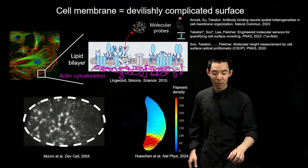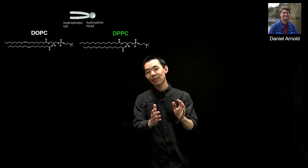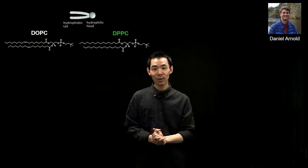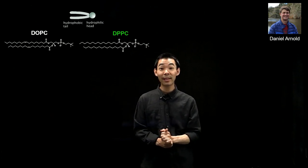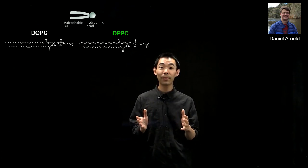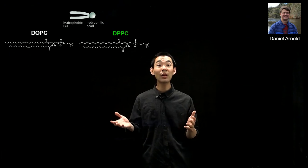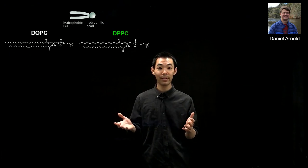My student Daniel Arnold went to chase this question. What he did was to develop a synthetic reconstituted model of the cell membrane by taking two different types of lipids.